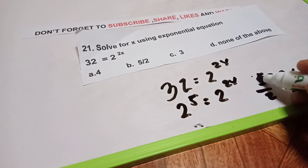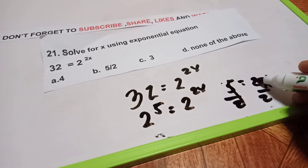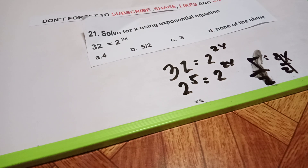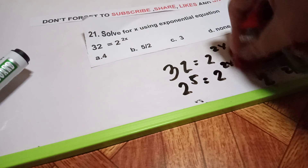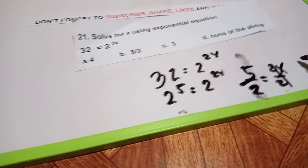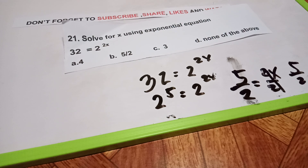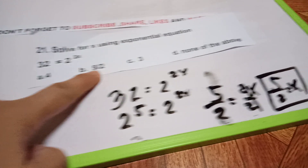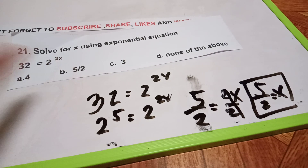So divided by 2 on both sides, the answer is 5 over 2. The answer is 5 over 2, which is letter V.